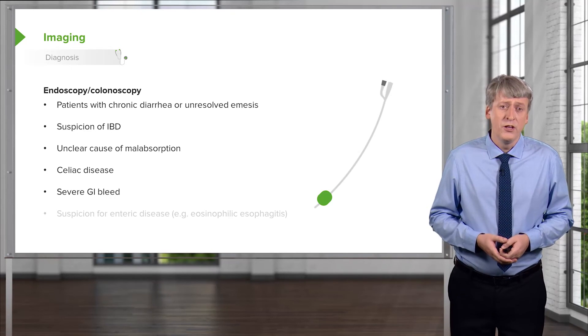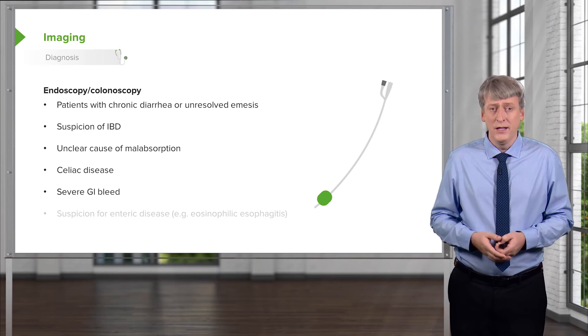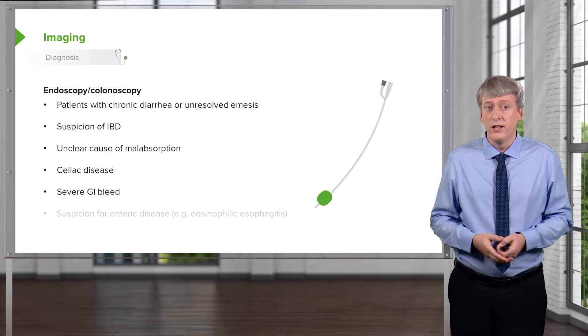Obviously, in any patient with a severe GI bleed, we want to go to endoscopy to try and stop the bleed. Remember, GI bleeds can happen very quickly and can be very severe and life-threatening.